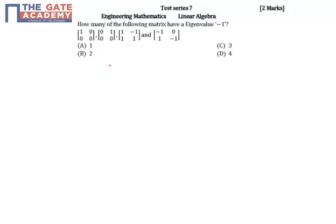The problem is asking how many of the following matrices have an eigenvalue of minus 1. For any matrix, to find the eigenvalues, the formula is lambda times I minus A equals 0.